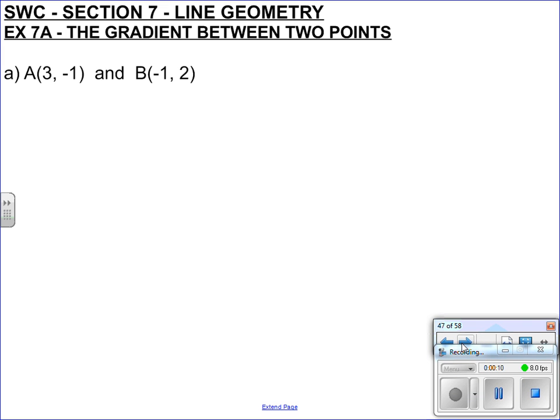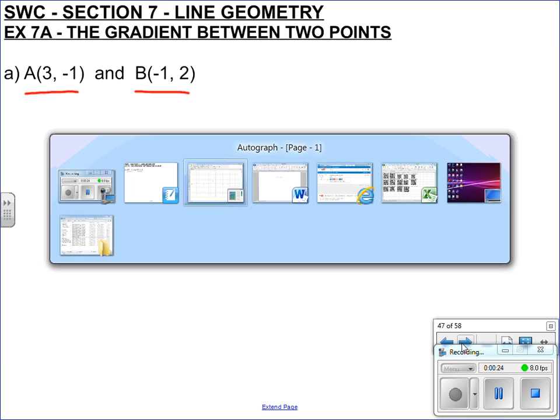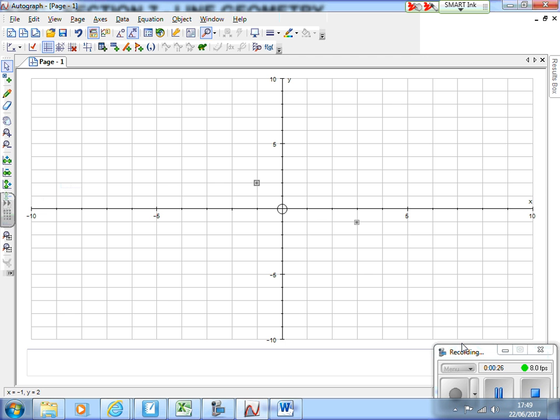Hi everyone, so this video is on the gradient between two points. We've got two points here, A and B, with coordinates A(3, -1) and B(-1, 2). I've put this on Autograph.